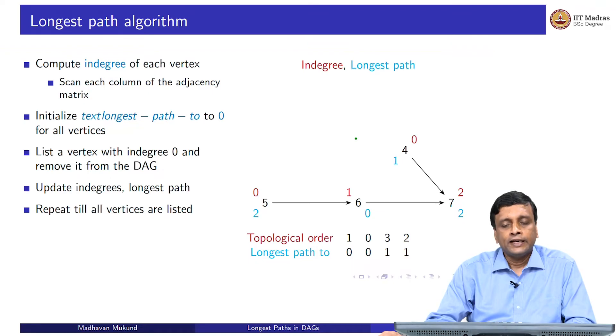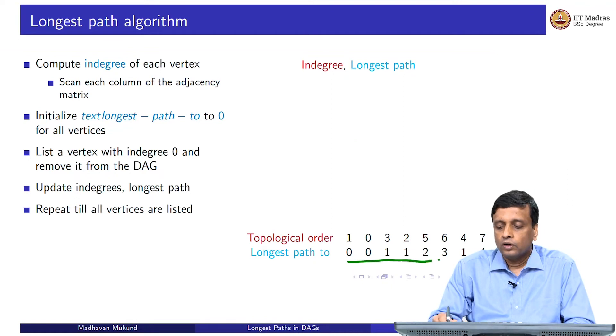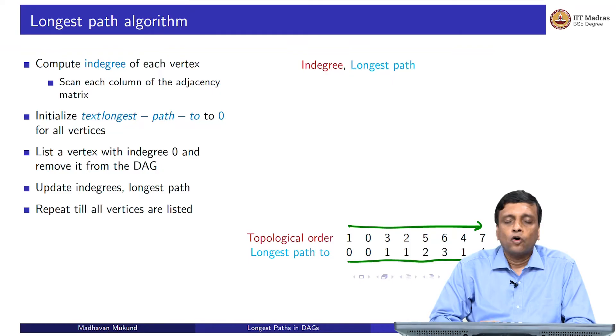Now if I enumerate 5, then I get that 6 requires 3 steps. If I enumerate 6, then I get that 7 requires 4 steps. Finally, when I enumerate 4, I get no new information for 7 because 4 required only 1 step and 7 we already know requires 4 steps. Finally, I enumerate 7 and I have this sequence. I have the sequence below which I computed along with the topological sort above, telling me the longest path to each of these vertices in my graph.